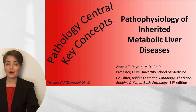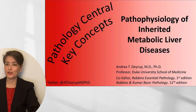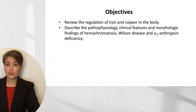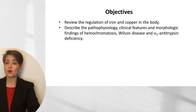Welcome to Pathology Central Key Concepts. The topic of this video is the pathophysiology of inherited metabolic liver diseases. There are three entities covered: hemochromatosis, Wilson disease, and alpha-1 antitrypsin deficiency — all of which are associated with increased risk of cirrhosis and therefore hepatocellular carcinoma.